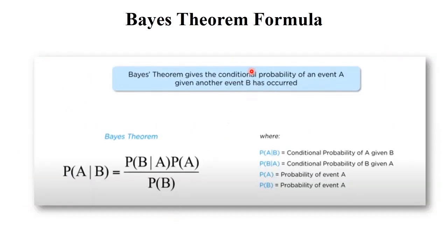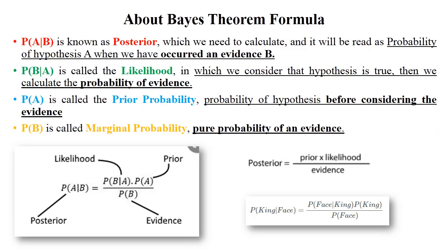The Bayes' theorem formula is: probability of A given B equals probability of B given A, multiplied by probability of A, divided by probability of B. In this formula, consider that there are two environments A and B, and from that environment you need to calculate these probabilities.